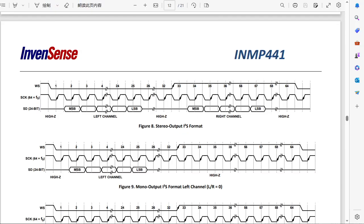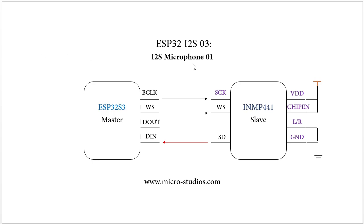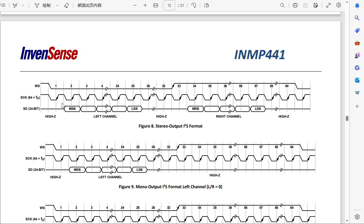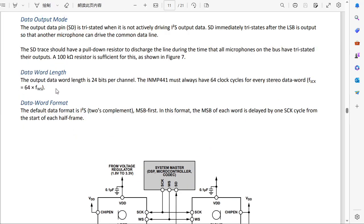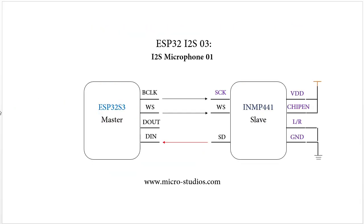So these are the three important pieces of information for our I2S microphone: the pin connection, the timing, and the data word length and format. I'm Michael — see you next time.